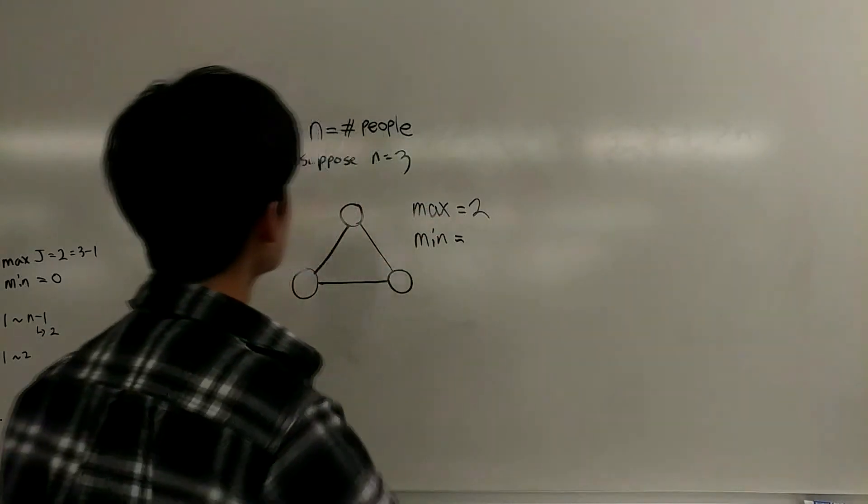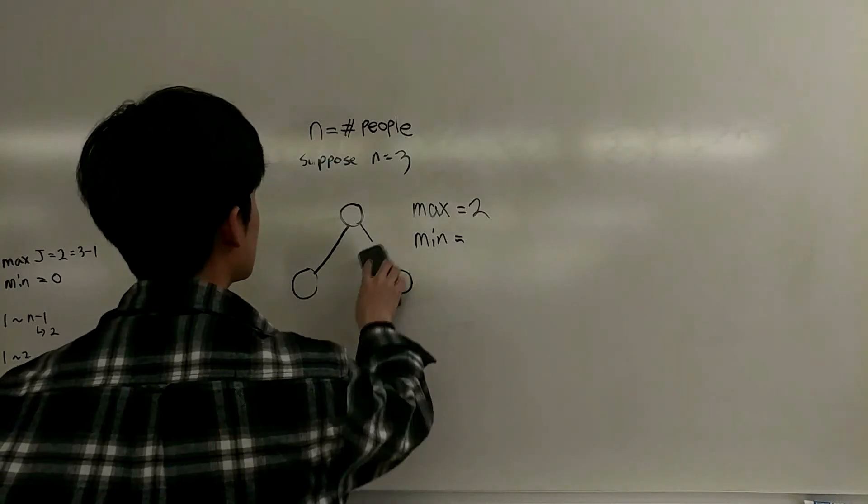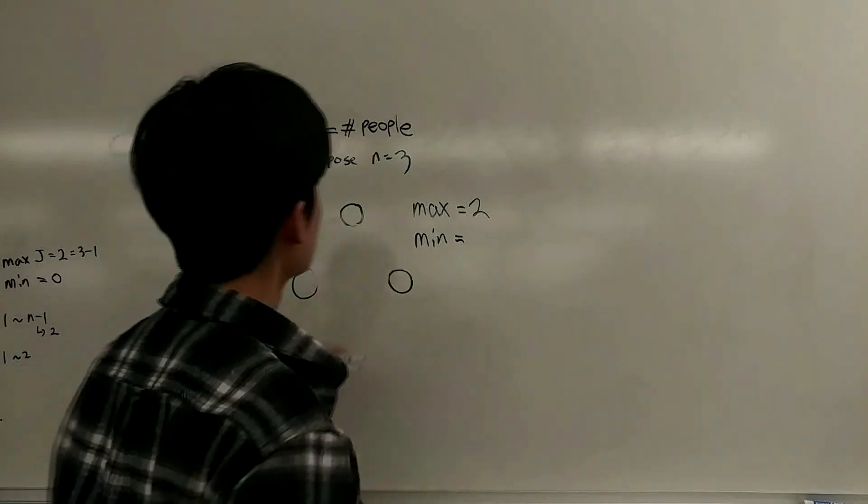To get the minimum, we simply get rid of those connections, and the minimum would be zero.